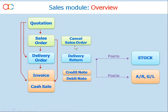Secondly, document modification. Besides the ordinary edit and cancel functions in sales order, you may use cancel sales order to partially or fully cancel a sales order. This is traceable and will be reflected in outstanding reports. Similarly, delivery return, credit note, and debit note are mainly for adjustments in invoices that involve movement of stock.